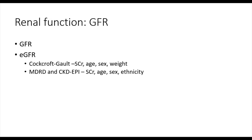These equations are very good at estimating the GFR at low levels, and are actually inaccurate at high normal or supranormal levels, which is why the eGFR is often reported as greater than 90 mls per minute per 1.73 m², rather than specifying a value. This is fine, because the main utility of the eGFR equations is to monitor renal function in chronic kidney disease, which is really only significant when the eGFR is less than 60.